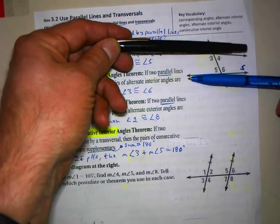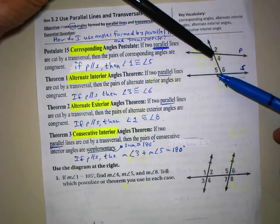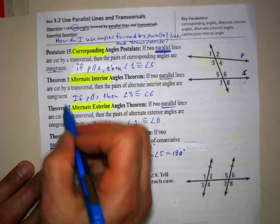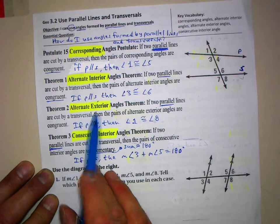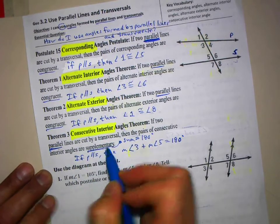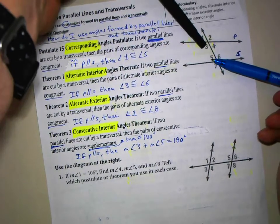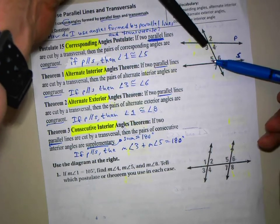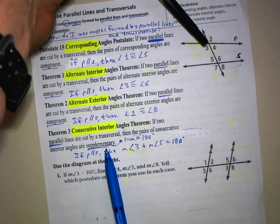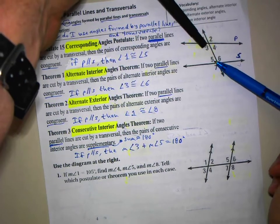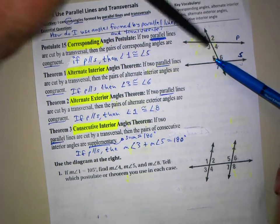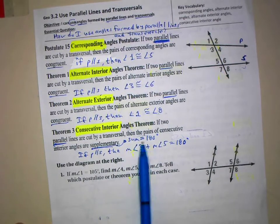If these two lines are parallel, does that mean the consecutive interior angles are congruent? With corresponding angles they're congruent; with alternate interior angles they're congruent; with alternate exterior angles they're congruent. But when we come to consecutive interior angles, they're supplementary. So angles 3 and 5, for example, are not guaranteed to be congruent. But we are guaranteed that they are supplementary.